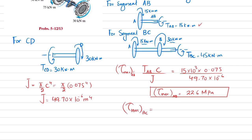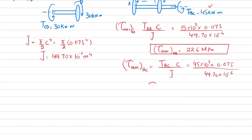Now the maximum shear stress in segment BC equals T_BC times c divided by J. Torque in segment BC is 45 kilo-newtons, so 45 times 10 to the power 3, c is 0.075 meters, divided by J of 49.70 times 10 to the power minus 6. When calculated, the maximum shear stress in segment BC equals 67.9 megapascals.